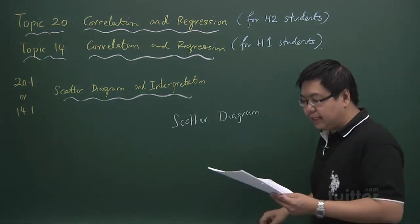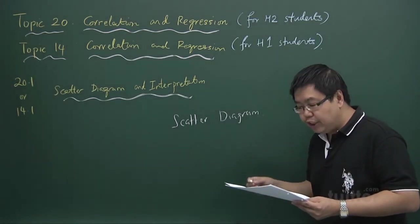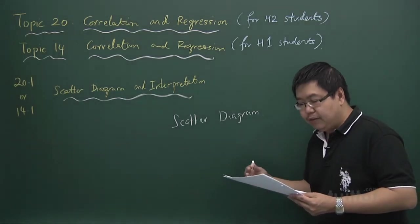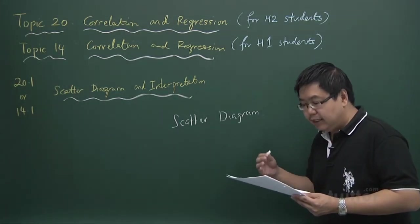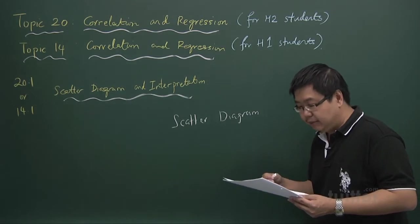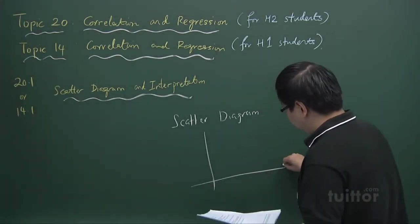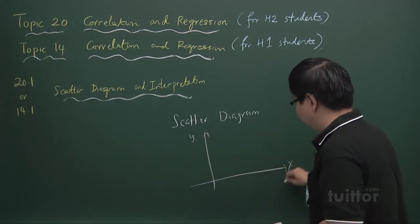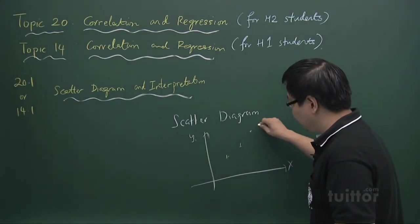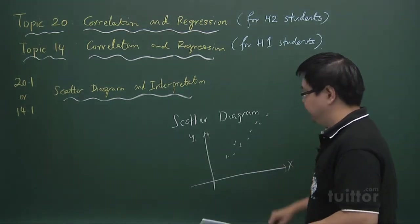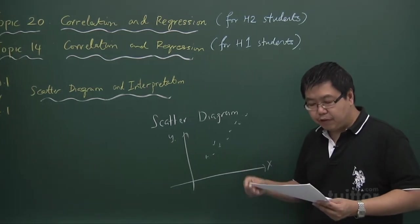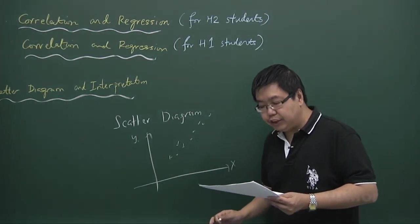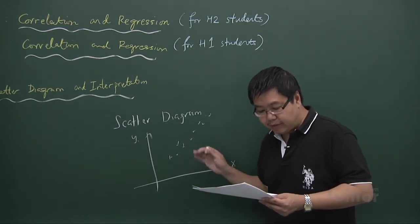A scatter diagram is obtained when each of the observed bivariate data, that means xi, yi, where i equals 1 to n, is plotted on the Cartesian plane. So that means you are having something like y and x and some kind of points being plotted in this manner. From the plot, we can roughly judge if there is any relationship or linear relationship between x and y.